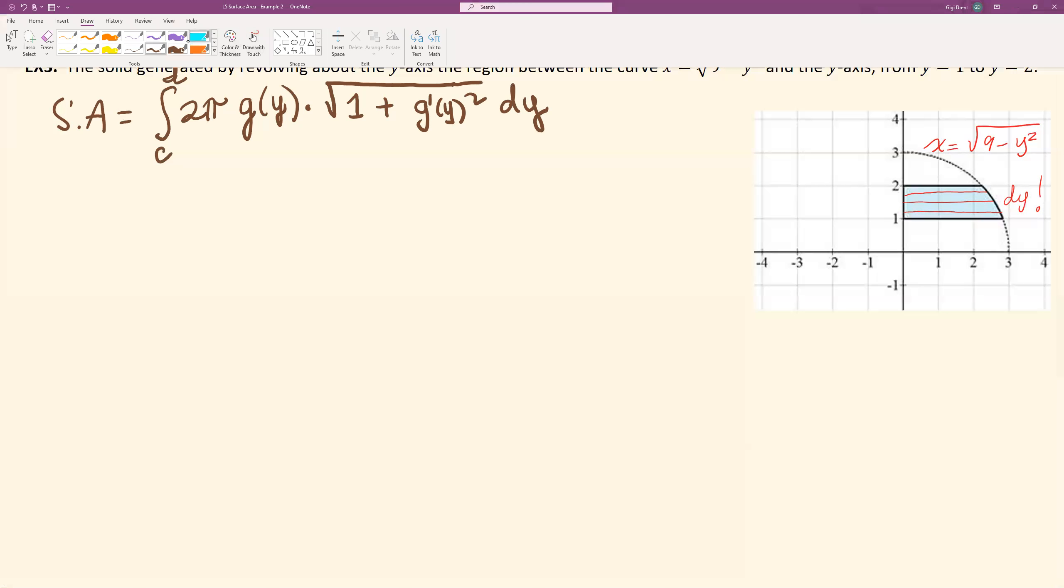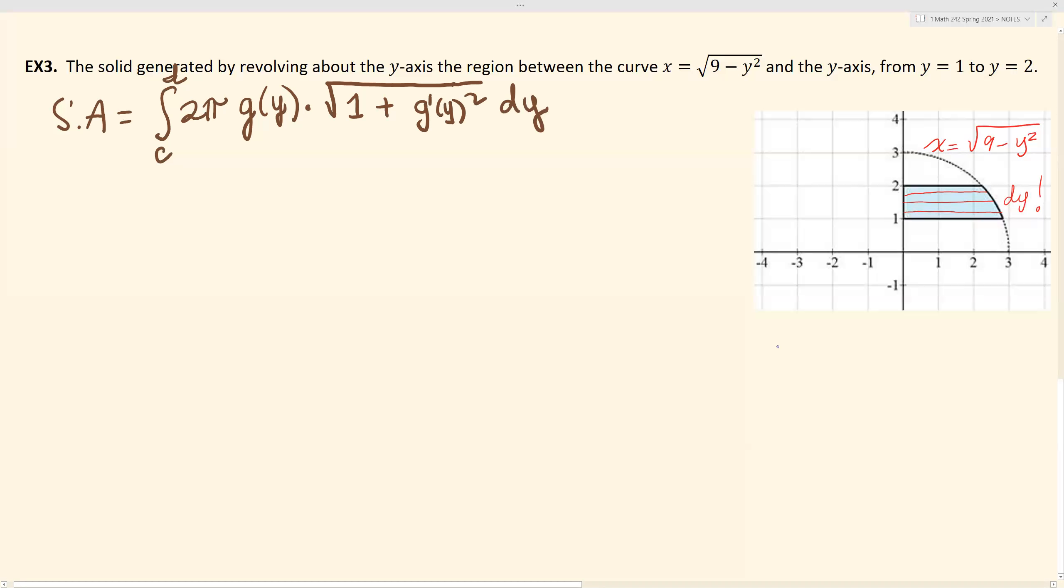Now in order to go ahead and use the derivative, I need to find it. So g(y) in this case is square root of 9 minus y squared. So then g'(y) is going to be 1 over 2 square root of 9 minus y squared, multiplied by my inside derivative which is negative 2y, right? And then this 2 divided by this 2 will just be negative y on the numerator. So I'm going to write: g'(y) is negative y over square root of 9 minus y squared. All right, that's the thing that we are going to square up in our equation of surface area.